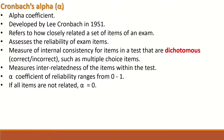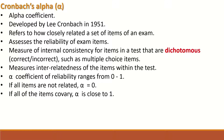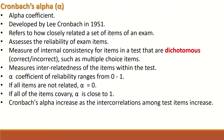If all the items are not related, then alpha will be equal to zero, and if all of the items co-vary — i.e., are related — then alpha is close to one. Cronbach's alpha increases as the intercorrelation among test items increases.